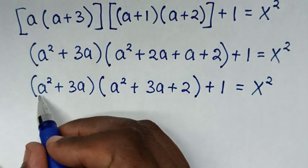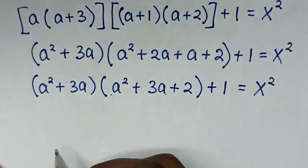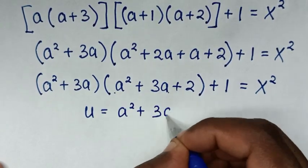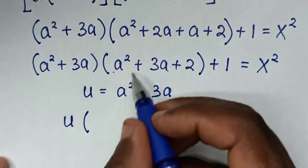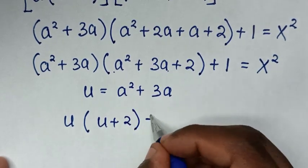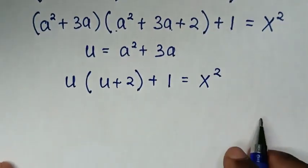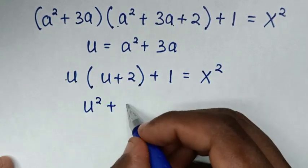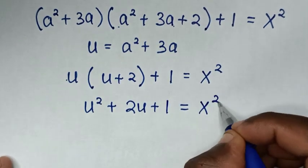Then in the next step, from here a²+3a and a²+3a is common, so we let u equal a²+3a. So it will be u times (u+2), then plus 1 is equal to x squared. Then u times u is u², plus u times 2 is 2u, then plus 1 is equal to x squared.